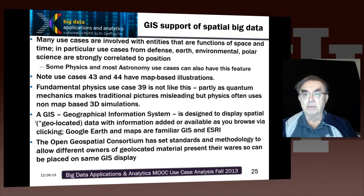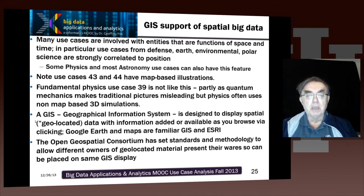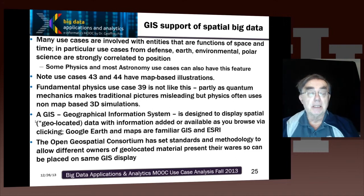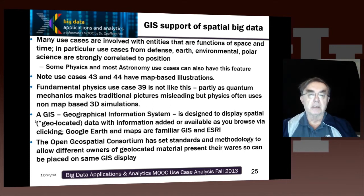We pointed out the geographic information system classification, and that's very important, because so much big data is labeled by space — three dimensions and time, possibly just space, but typically space and time. That space and time could be on the Earth, macroscopically in the atom, macroscopically in the cosmos for astronomy. A geographical information system is designed to display spatial, also called geolocated, data so that you can get an insight as to what's going on by just browsing — as you're very familiar with Google Maps, Google Earth, or Microsoft Virtual Earth.